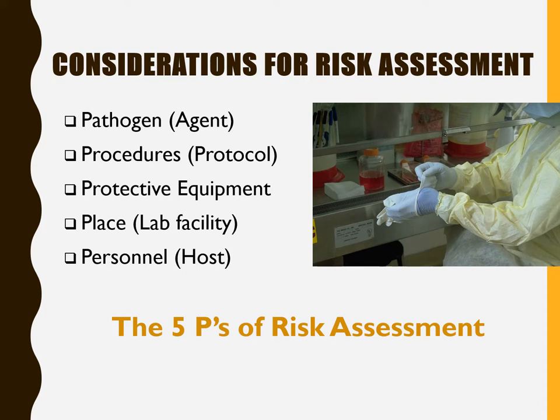Considerations for risk assessment. The first is pathogen or agent — what are the characteristics of the agent that make it hazardous? This is where the risk assessment starts. The second is procedures or protocol — the procedures being done with the organism in the vial, tube or petri plate, including addressing the biosafety level to handle the agent. The third is protective equipment such as biosafety cabinets, sealed centrifuge rotors, transport containers, biomedical waste containers and personal protective equipment. Are all the equipment operational and functioning properly, and are you trained to use it correctly?